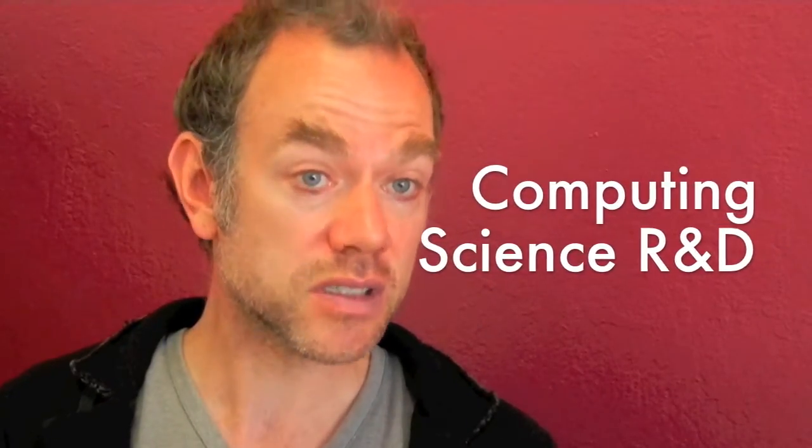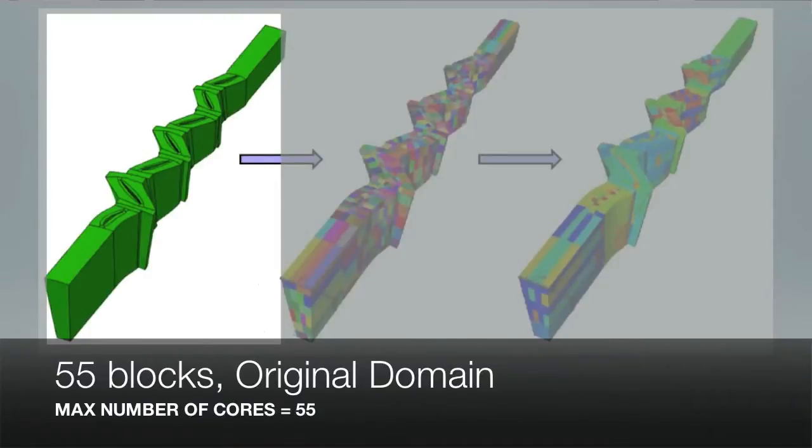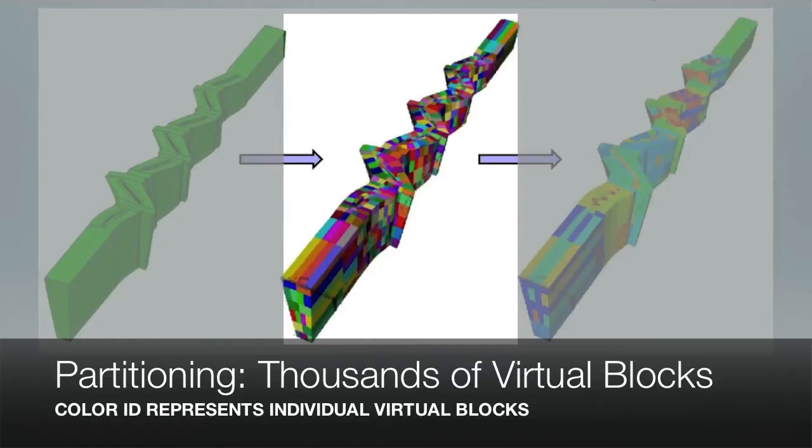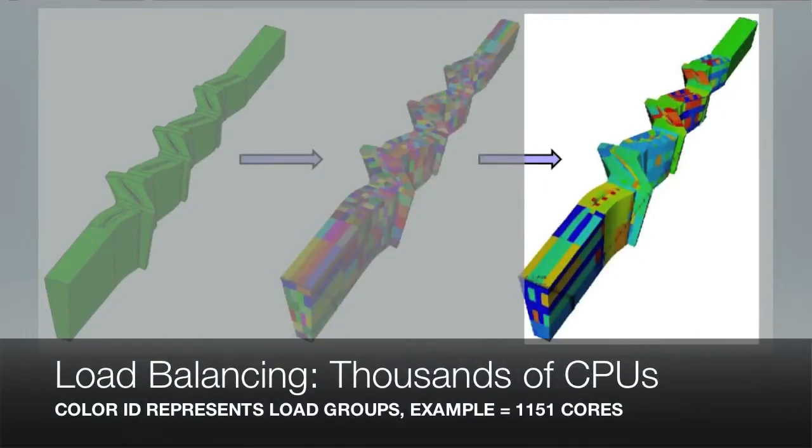We all have tight schedules, so the amount of analysis we can perform within a certain timeframe is very important. Solver speed is something on which we have always insisted a lot in FineTurbo, and the tool is now extremely competitive on that aspect. This includes fully transparent procedures to partition multi-block structured grids so that they may be easily distributed across thousands of cores while maintaining an optimal load balance.